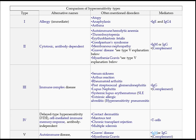Type 2 is cytotoxic antibody-dependent — this is very important, antibody-dependent is Type 2. The diseases included are autoimmune hemolytic anemia, thrombocytopenia, erythroblastosis fetalis, Goodpasture syndrome, membranous nephropathy, and Graves' disease. There is another classification, Type 5. Myasthenia gravis and Graves' disease can be included in Type 2. The mediators are IgM and IgG.